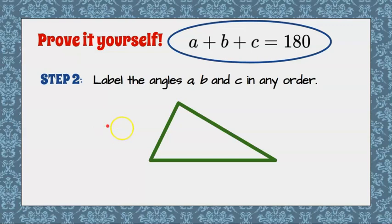Step 2. Now that you've drawn your triangle you're going to label the angles A, B, and C in any order. A, B, and C. It does not matter which angle is which letter.